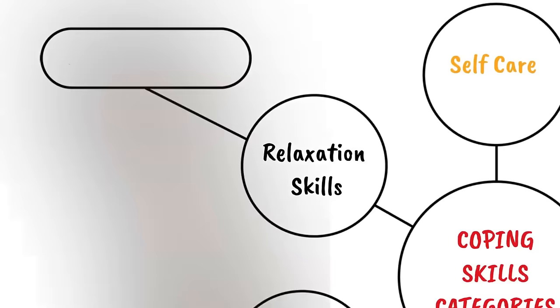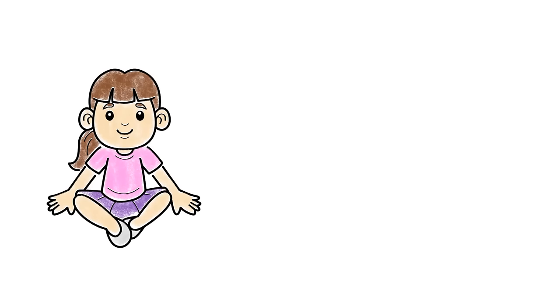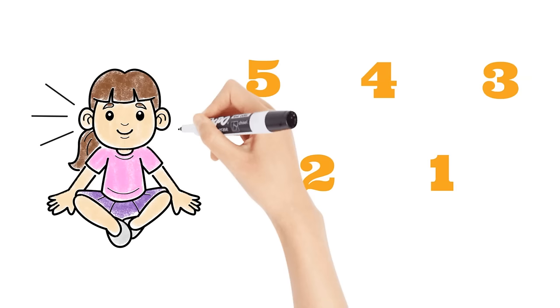Number one, grounding skills. These are a type of relaxation skill that help to ground you in the present moment, so you don't stress about the past or the future. One of the most common grounding skills is called the five, four, three, two, one grounding technique. For this skill, you sit down calmly and notice your five senses. Start by taking a deep breath to relax your brain and body.